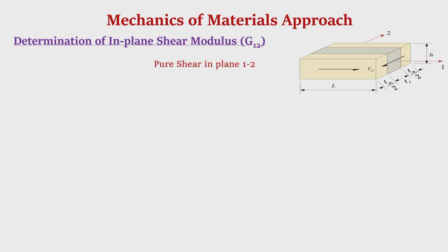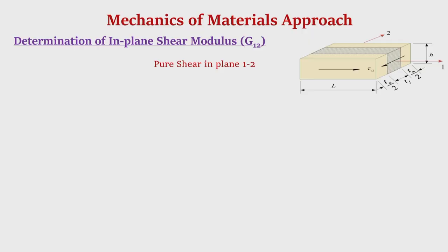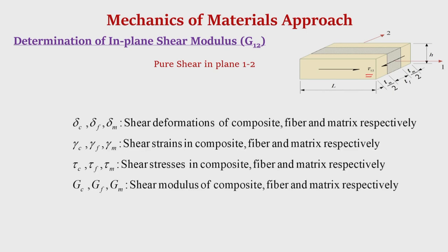Next, we will discuss the determination of in-plane shear modulus of a lamina. In this case we again consider the same RVE, but it is now subjected to pure in-plane shear tau_12 — that means only pure shear tau_12 and no other stresses. Due to this in-plane shear, the shear deformations in the composite, fiber, and matrix respectively are delta_C, delta_F, and delta_M.